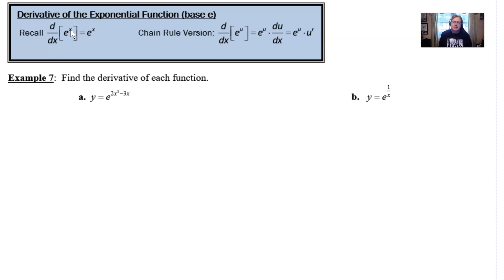So it just seems natural that if you take the derivative of e to the u, something more than just that x, you're going to have to use the chain rule, and it's just going to result in e to the u times the derivative of whatever that u was.